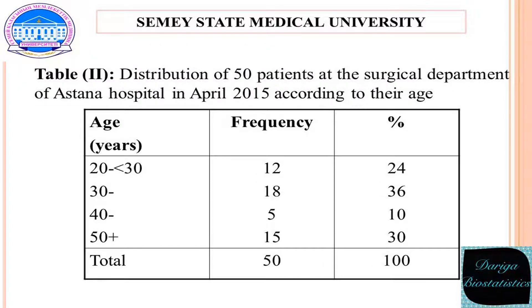The next example is almost the same as the previous. The table depicts distribution of 50 patients at the surgical department of Astana Poldar Hospital in April 2015, according to their age. In this case, the variable is age.